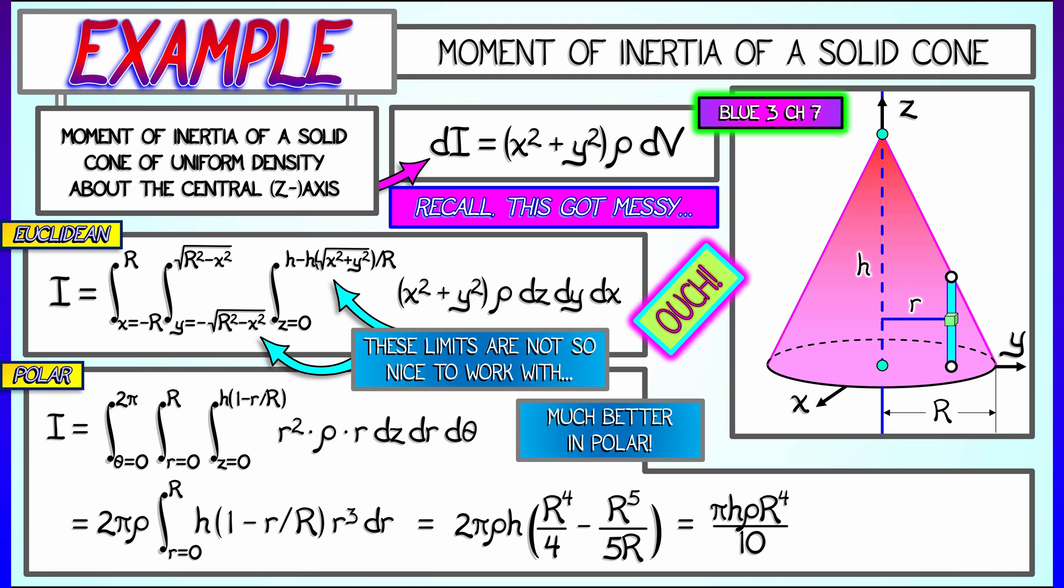If we use the fact that the mass of this cone is pi r squared h over three times rho, then we can factor that into this answer to get a final result. The moment of inertia is three tenths m r squared, where m is the mass of this cone. That's a nice result, thanks to polar coordinates.